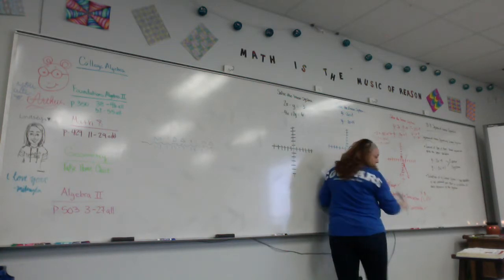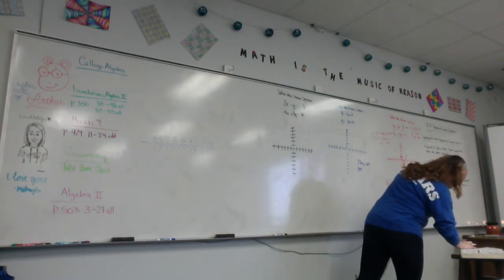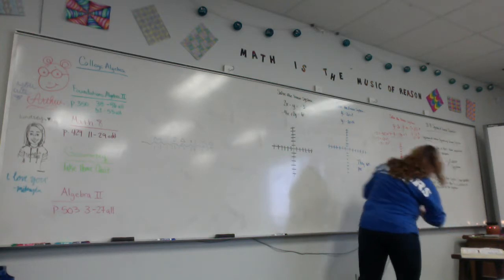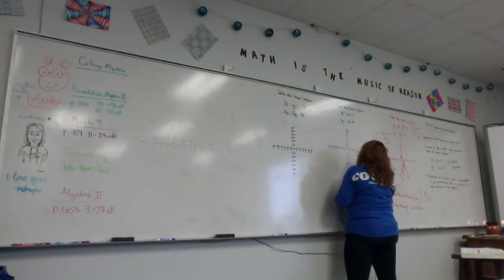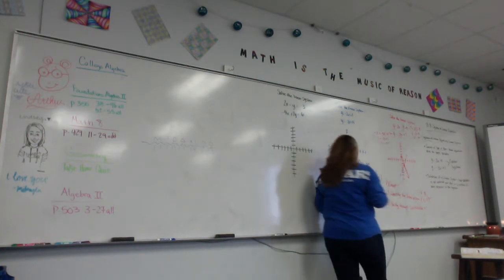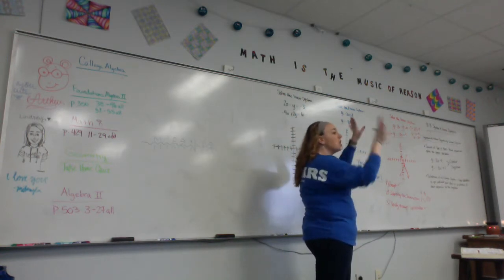So you can just say they are parallel, which means no solution. Because they are parallel, they will never cross. There is no solution. Now I'm going to graph it just to show you.